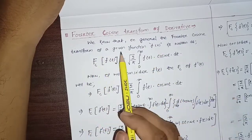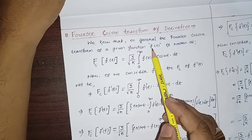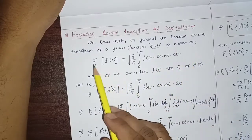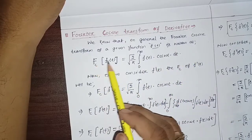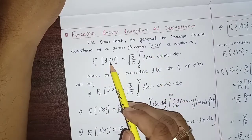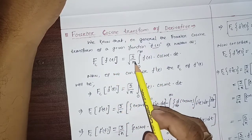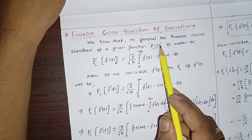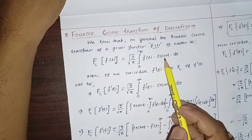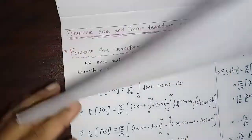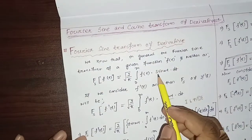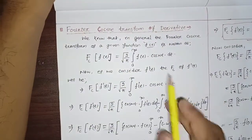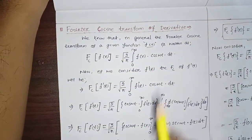We know that in general the Fourier Cosine Transform of a given function — suppose f(t) — is written as: FC{f(t)} = √(2/π) · ∫₀^∞ f(t) cos(ωt) dt. In case of sine it will be sin(ωt) dt, but here it is cos(ωt) dt.